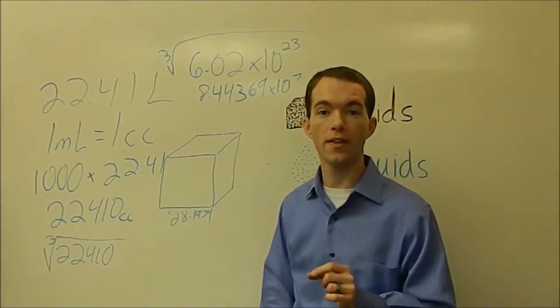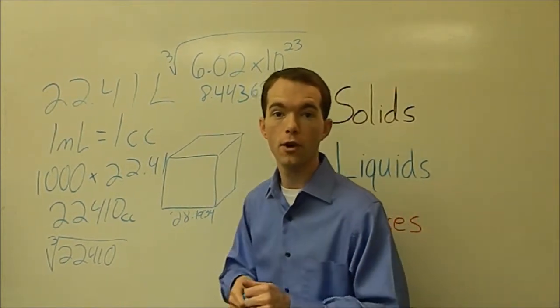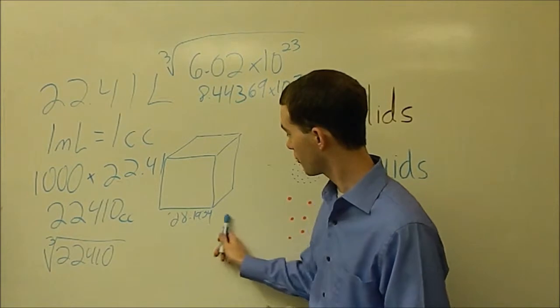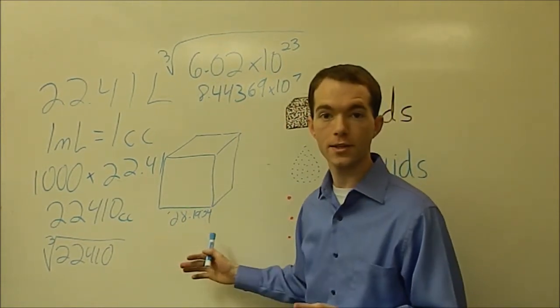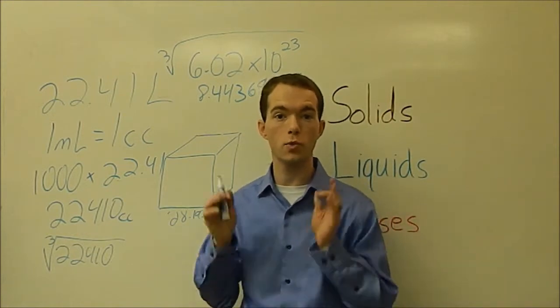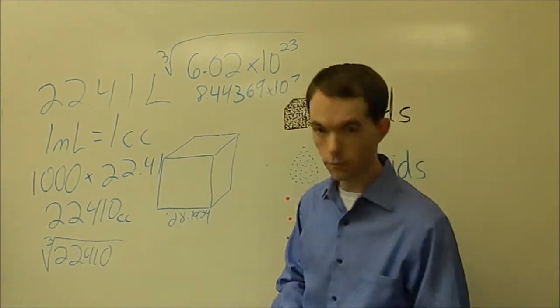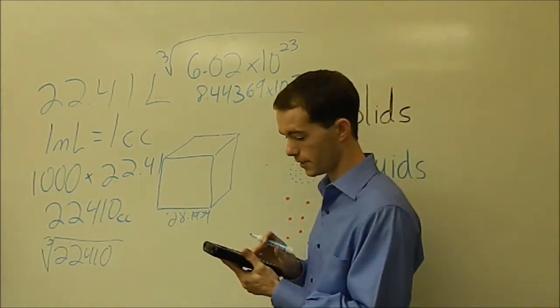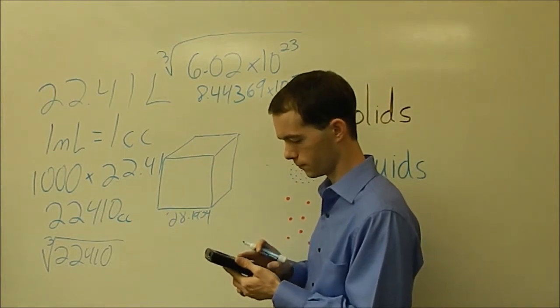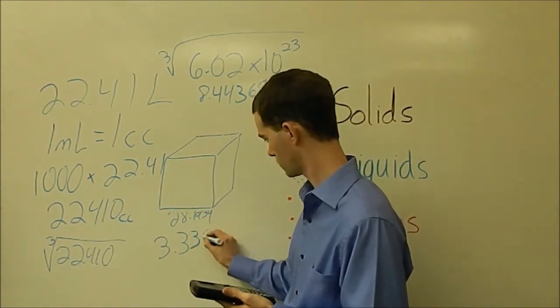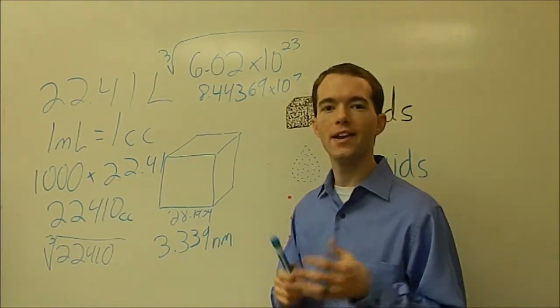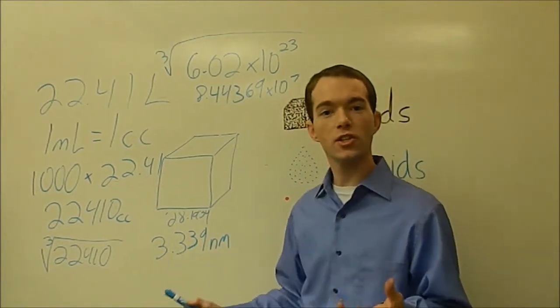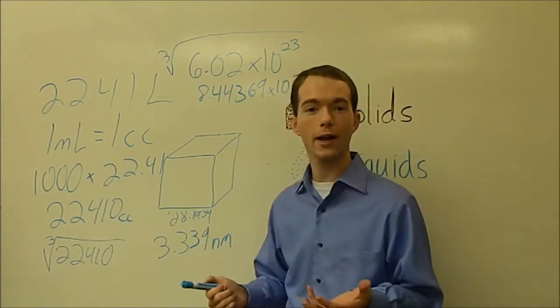Well just how close are they then? Well that's easy to figure out. We simply take this number here, our distance, divided by the amount of stuff that's in that distance to get our distance between molecules. And that number is 3.339 nanometers. That's ridiculously close. Much closer than I actually thought it would be.